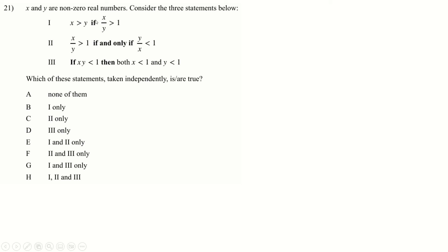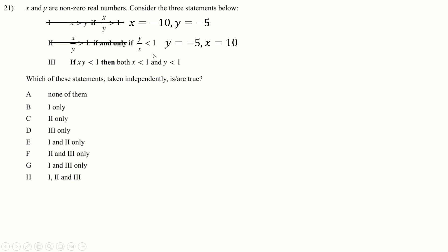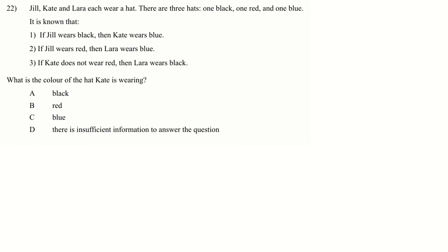Question 21: x and y are non-zero real numbers. Read each conditional carefully — 'if this then this'. For statement A: using x = −10, y = −5, the ratio is 2 > 1 but −10 is not bigger than −5, so it's false. For statement B: x/y = −0.5 < 1 but y/x is not bigger than 1, so it's false. For statement C: if x/y < 1 then x < y — using a straightforward counter-example shows this is false too. Answer: none of them.